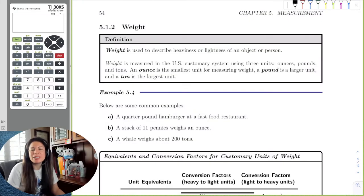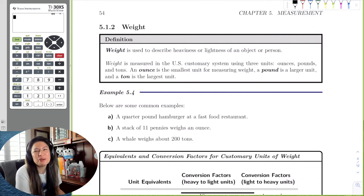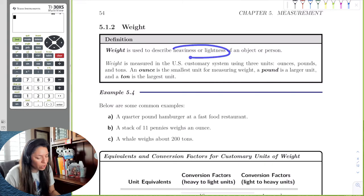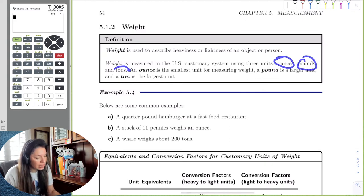Okay, so the next part of the U.S. Customary System is our weight. Don't worry, we're going to do weight in different things other than our own weight. So weight is just a measurement to describe the heaviness or lightness of an object or person. Weight is measured in ounces, pounds, and tons.